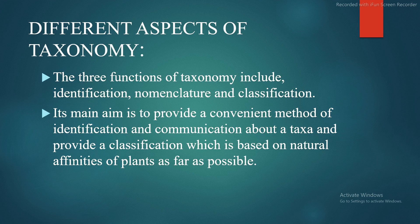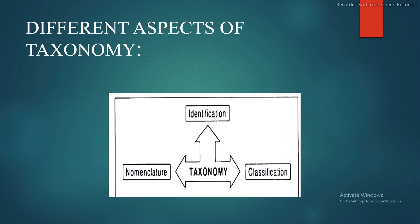The three functions of taxonomy include identification, nomenclature, and classification. Its main aim is to provide a convenient method of identification and communication about the taxa, and to provide a classification which is based on natural affinities of plants as far as possible. Taxonomy includes these different aspects as shown in the figure.